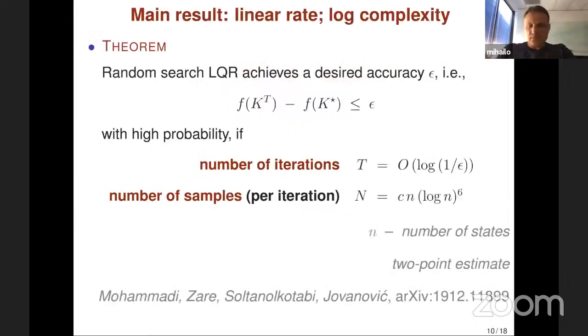This slide summarizes the main contribution of our work. Hesam managed to show that if you use random search method for model-free LQR, you can achieve desired accuracy epsilon with high probability under the following upper bound for total number of iterations. T has to be a logarithmic function of the desired accuracy, and the number of samples per iteration that you need to utilize is proportional to the state dimension.